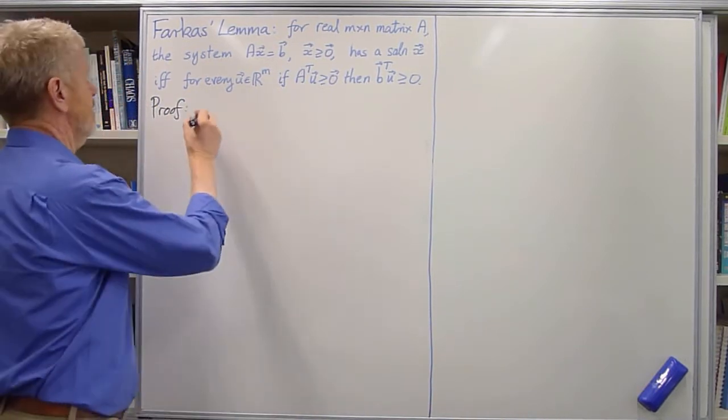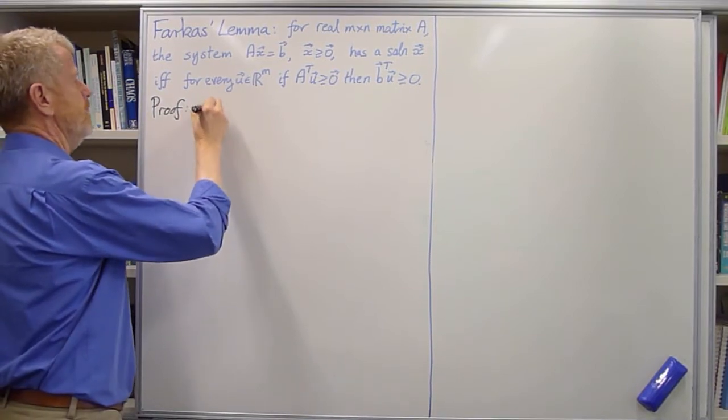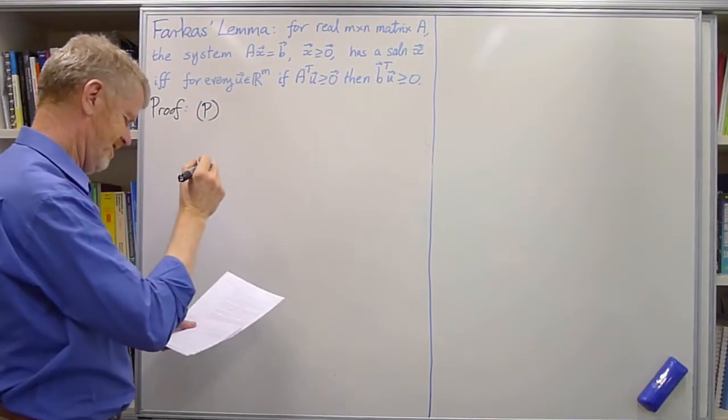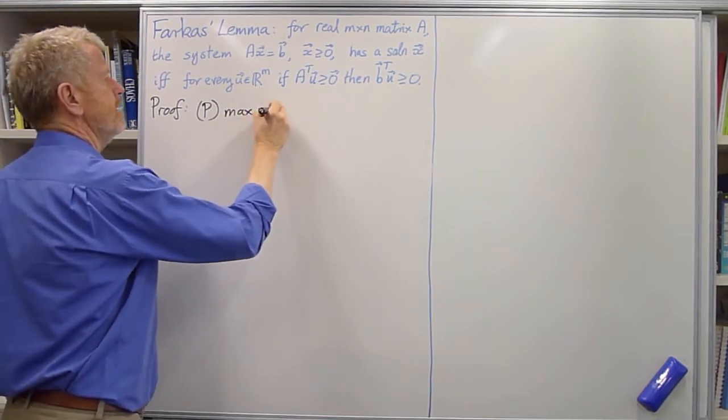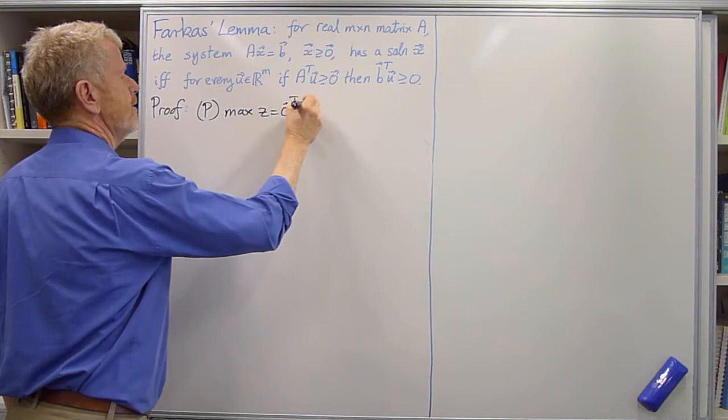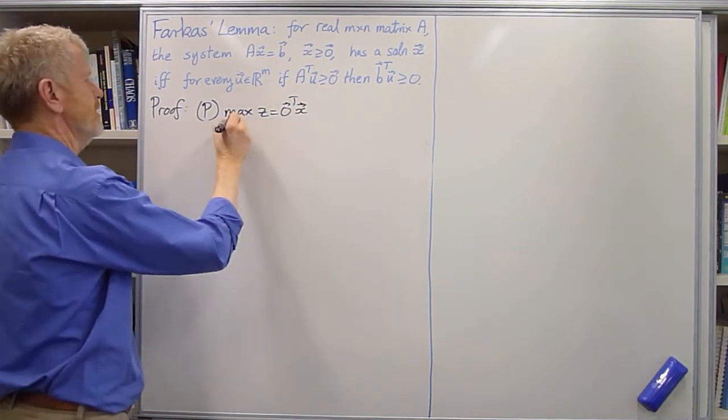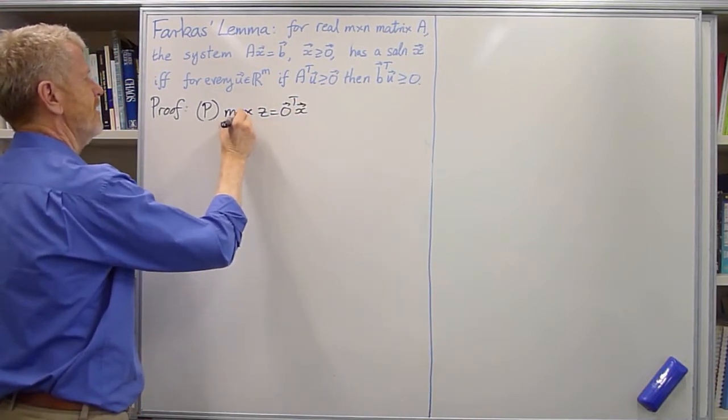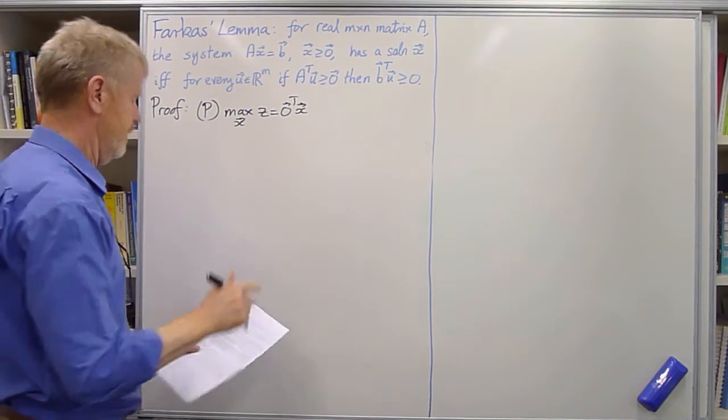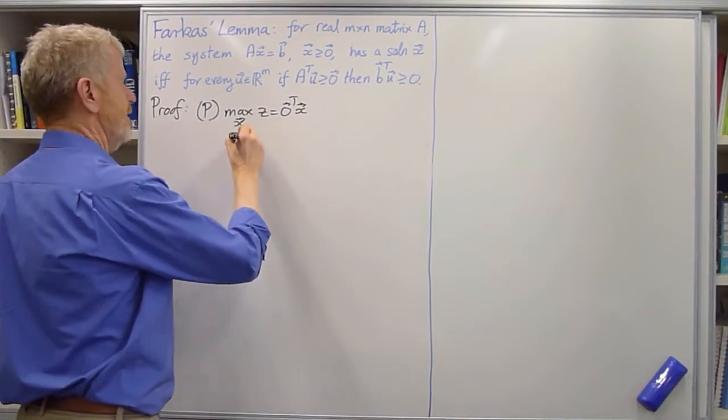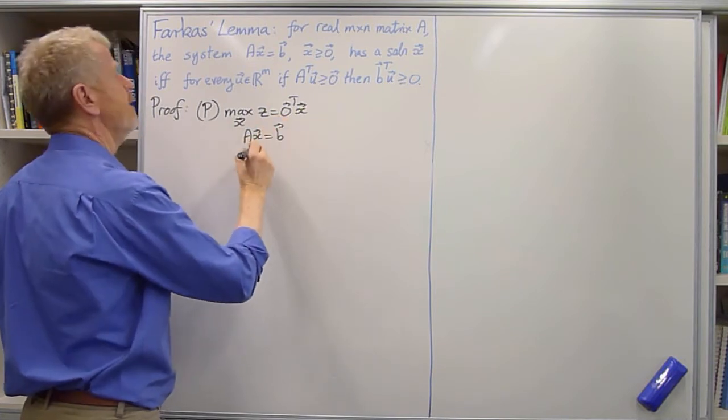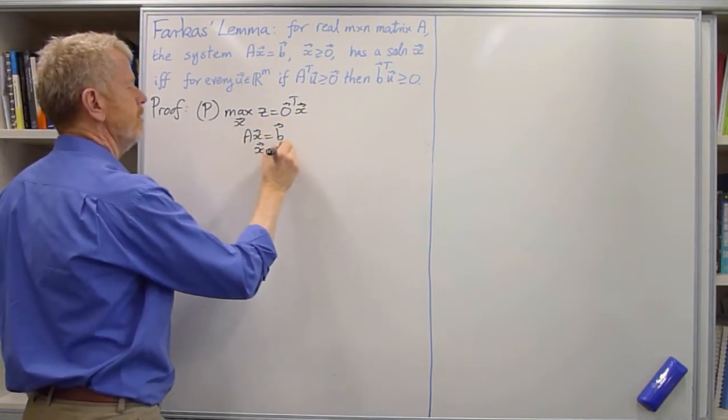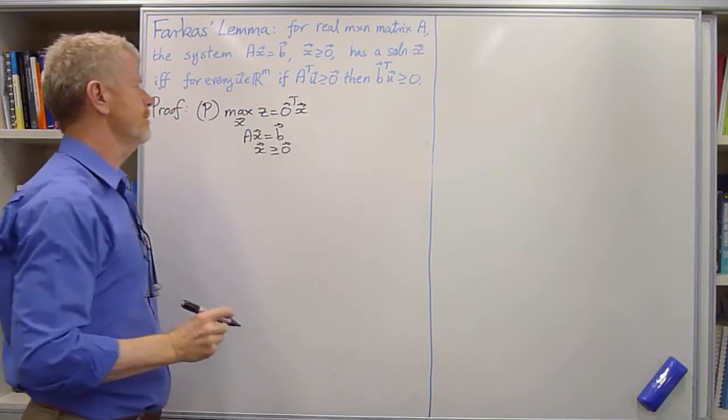So let's introduce the primal P that we're going to talk about, and that is, maximize Z equals 0 transpose X. This is a particularly simple maximization. Let's maximize over X, such that AX equals B, with X being bigger than or equal to 0.